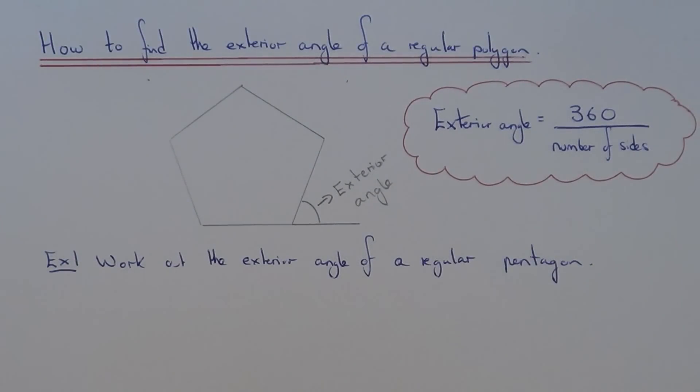Hi, today I'm going to show you how to work out the exterior angle of a regular polygon. First of all, let me just explain what a regular polygon is. A regular polygon is a shape which has equal sides and equal angles.